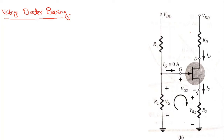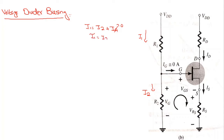Let us suppose that the current flowing in the R1 branch is I1 and the current flowing in the R2 branch is I2. If I apply KCL, we have I1 is equal to I2 plus IG. But in case of the field effect transistor, IG is equal to 0 ampere, and that is why we have I1 is equal to I2.